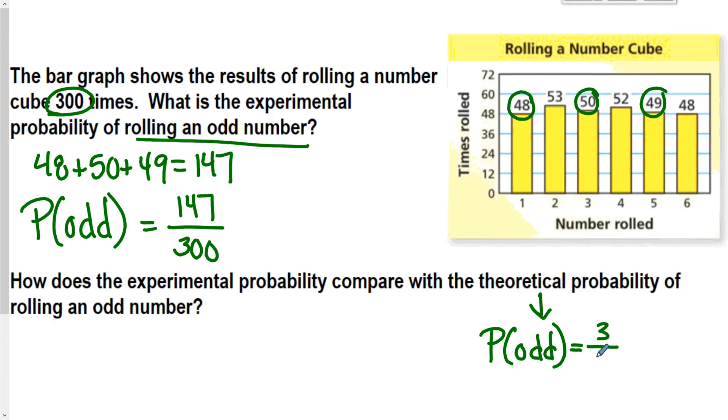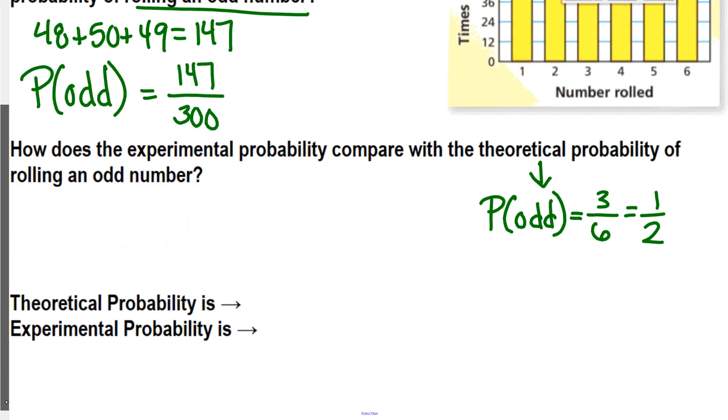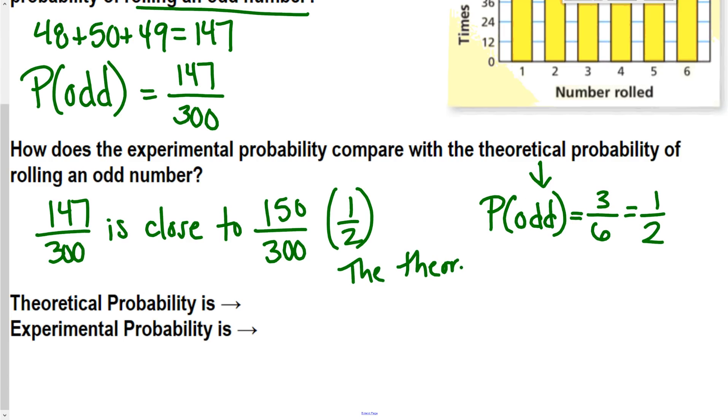And is 3 over 6 or 1 half. So what I'm looking to see is I'm seeing that 147 over 300, that is close to 150 over 300. And 150 over 300 does reduce down to 1 half. So what I see is that the theoretical and experimental are close.